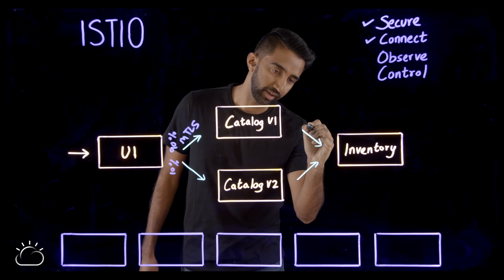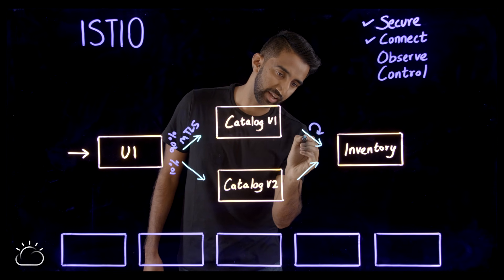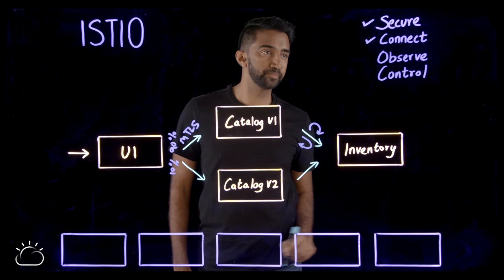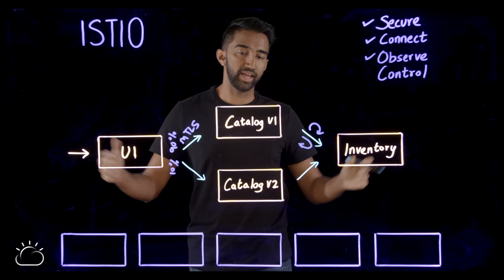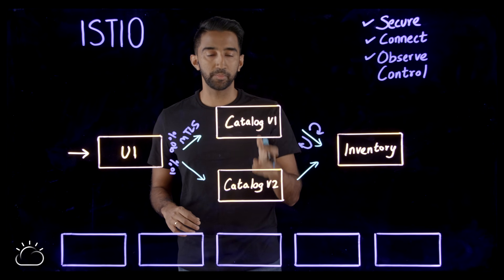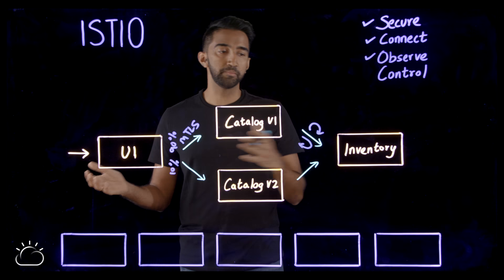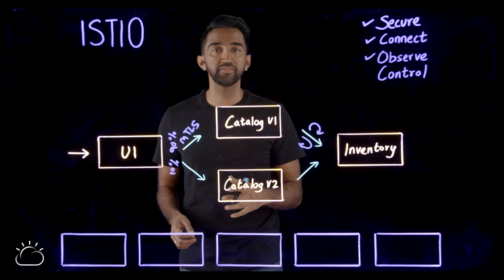I might also want to try adding retry policies and circuit braking to harden my system. Third, I want to observe how my application is doing end to end, not just if a service is up or down, but see where the bottlenecks are in the system and how traffic is flowing.